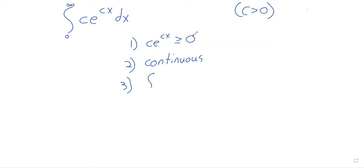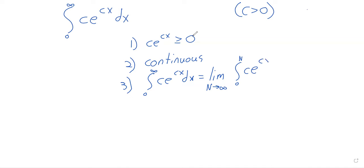The integral from zero to infinity of Ce^(-cx) dx is the limit as n goes to infinity of the integral from zero to n of Ce^(-cx) dx. What number do we have to get for our answer if this is going to be a probability distribution? What does the integral have to be?